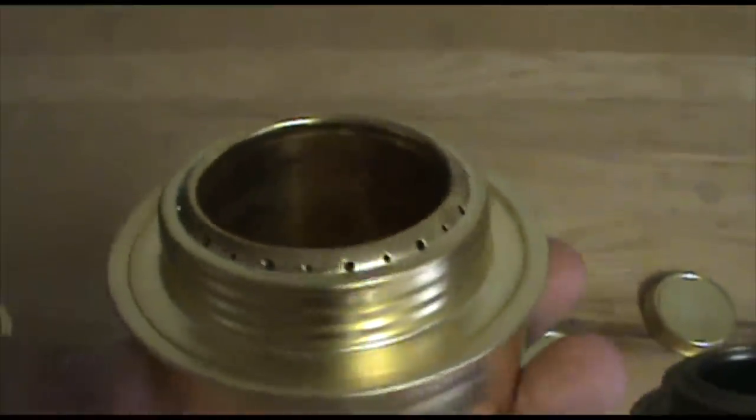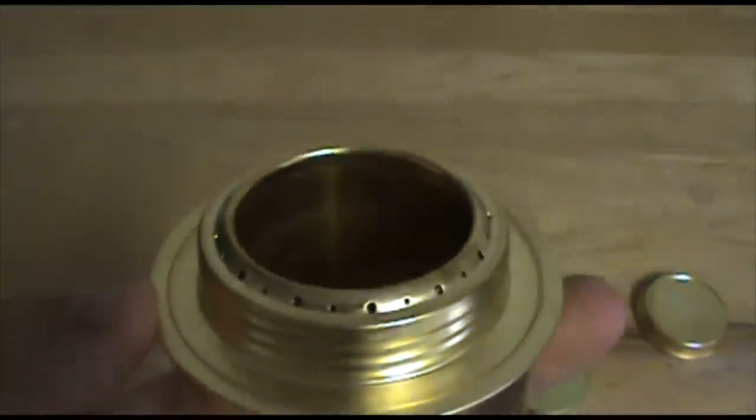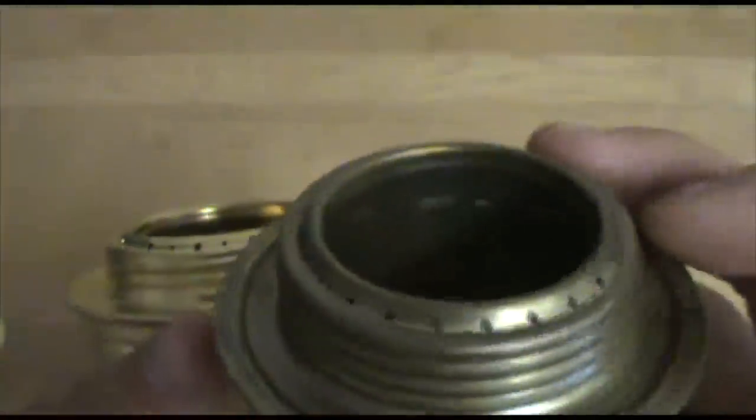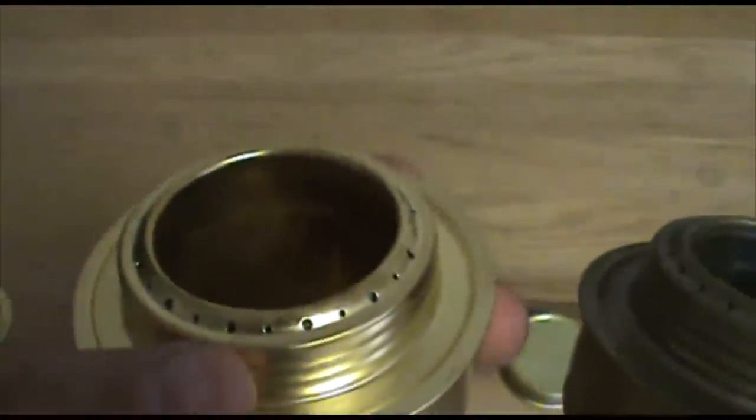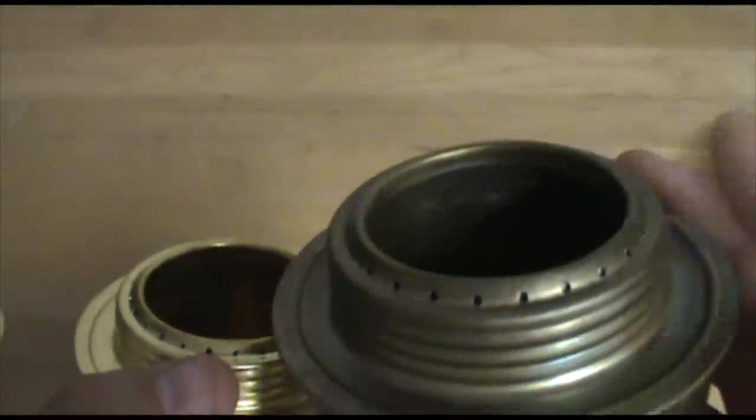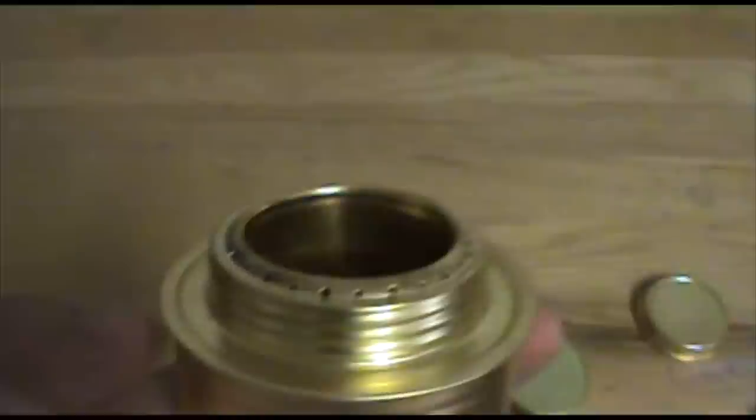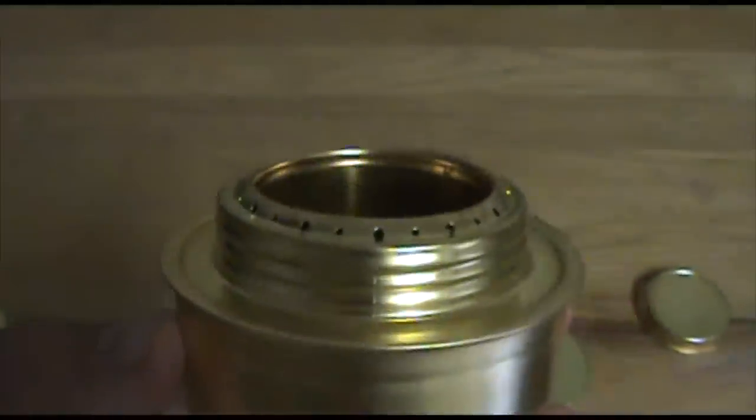I haven't done any testing to see which one burns better because I think the differences would be just really insignificant. So all the holes on the Trangia burner are about midway between the small and the large hole here. So you've got a bunch of middle-sized jets, or alternating small and large jets on the Esbit versus the Trangia.